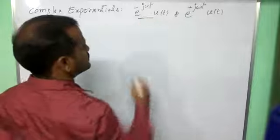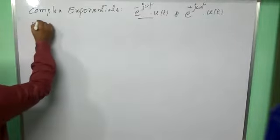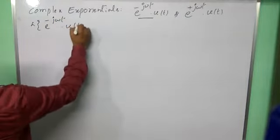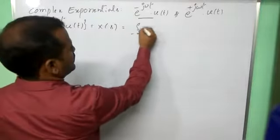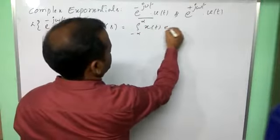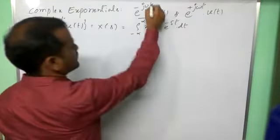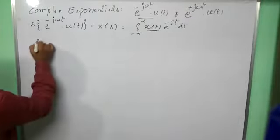First, let us find the Laplace transform of this complex exponential function. So Laplace transform of e^(-jωt)u(t), let us consider as X(s). General formula for Laplace transform I am rewriting here: integral of x(t)e^(-st)dt.